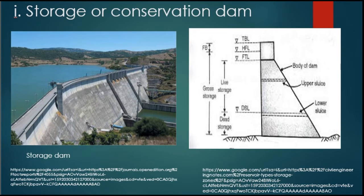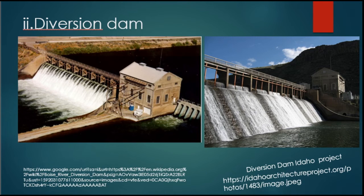The first type on the basis of function is the storage or conservation dam. This dam stores water during surplus periods, such as the monsoon, and releases it during deficit periods, such as the dry season. It is used for water supply, hydropower, irrigation, recreation, fish farming, or multi-purpose use. It is generally a high dam constructed as an embankment dam or concrete gravity dam.